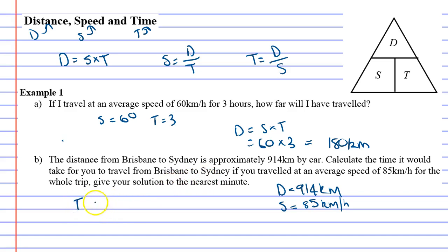All right, so what they want us to do is they want us to calculate the time, and time is distance divided by speed. Now distance is 914 over 85. This is what we're going to do on the calculator, and you have to do it on the calculator. I'll show you why soon. Now this gives you a decimal. I'm going to write the decimal down for now, but it's not the full answer.